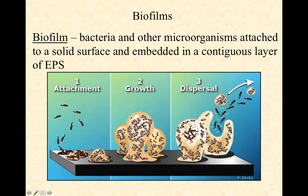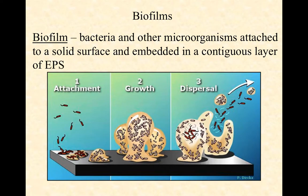Within this three-dimensional city there are channels for water, which is important because the water brings in nutrients, takes away waste products, and brings in oxygen to keep certain regions oxygenated. Then, how does it disperse? It disperses either by chunks of embedded bacteria releasing and then reattaching, or by individual cells escaping from the biofilm and moving on to wherever they're going next.